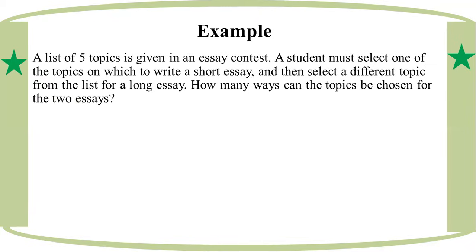A list of five topics is given in an essay context. A student must select one topic to write a short essay and then select a different topic from the list for a long essay. How many ways are possible for the topics to be chosen for the two essays?